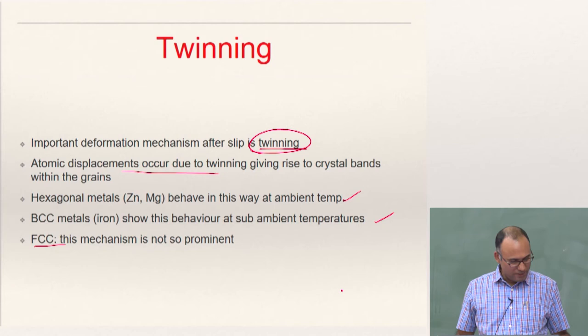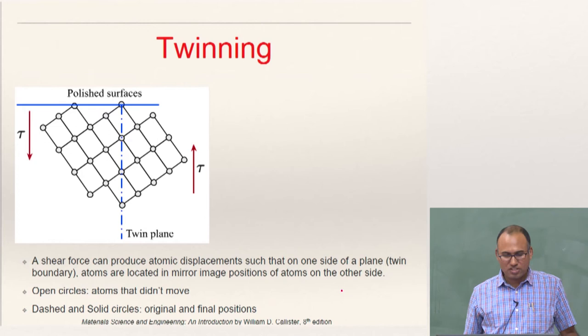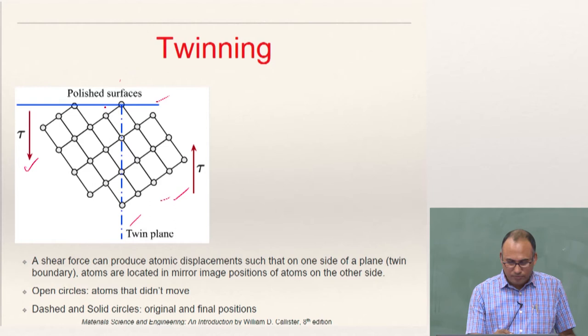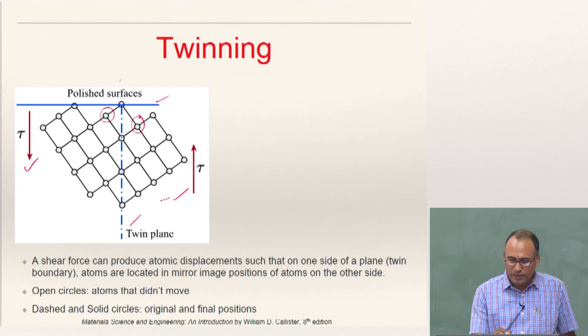Let us say this is your crystal lattice and you have this polished surface. Let us look at this plane — let us say this is your twin plane, similar to the slip plane we have discussed. Now you have applied a shear stress. What happens is the atoms on one side of the twin plane move with respect to the atoms on the other side in such a way that they become mirror images about the twin plane.